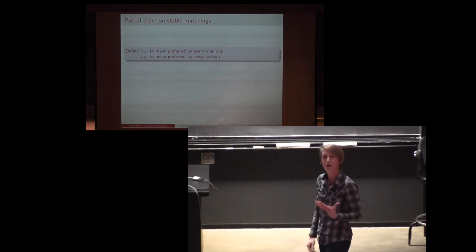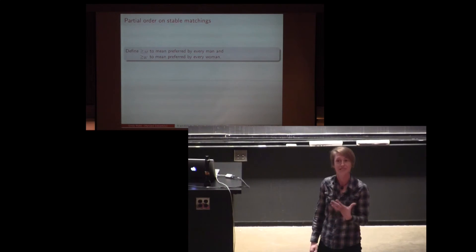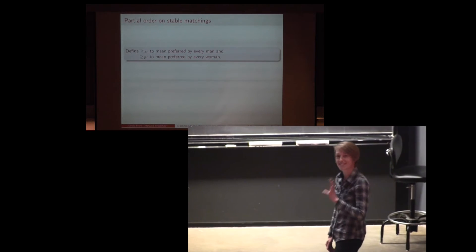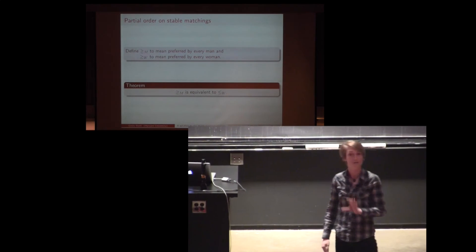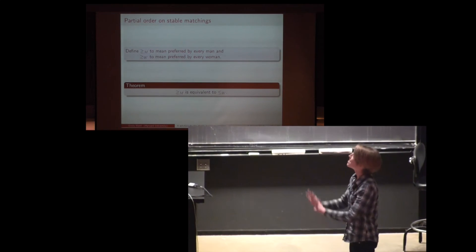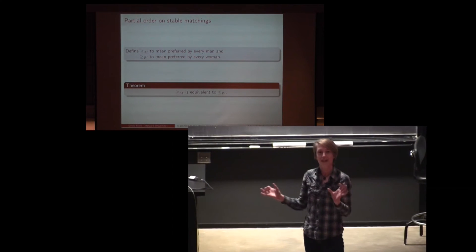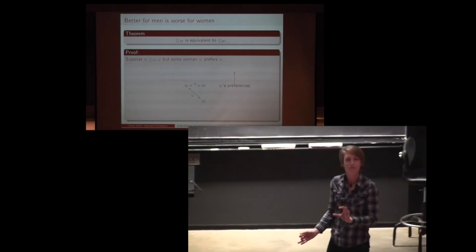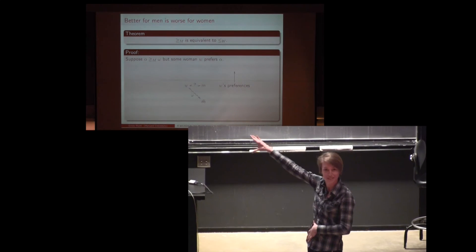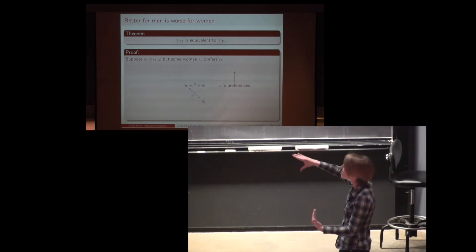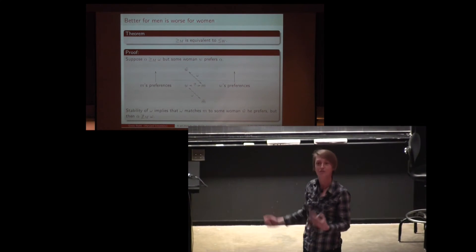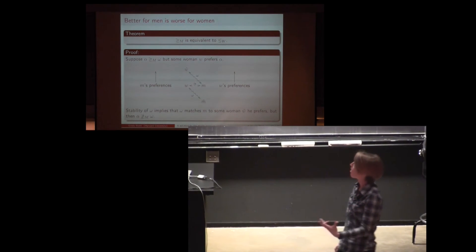Let's define a partial order to be preferred by every single man, and for symmetry also preferred by every woman. It turns out, as a consequence of stability, that these are diametrically opposed — better for the men is equivalent to being worse for the women. To prove this, consider two stable matchings, alpha and omega. Suppose alpha is better for the men, but then there's some woman who also prefers her alpha match M to her omega match M-tilde. But then stability of omega means M must prefer his omega match W-tilde — contradicting the supposition that alpha was preferred by all the men.